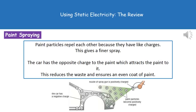In addition to being attracted to the car body, because all the paint particles carry the same positive charge they repel each other. This repulsion produces a much finer spray. Because the car body has the opposite charge it attracts the paint, resulting in much less waste and a nice, even coat of paint on the surface.